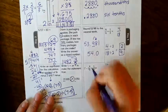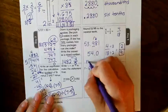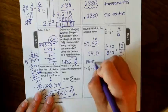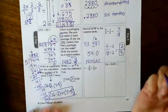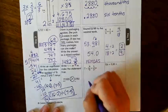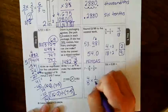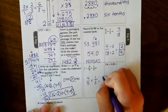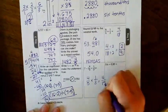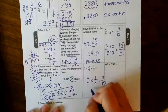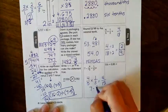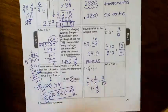Alright, this is please excuse my dear Aunt Sally, PEMDAS. We do what's in parentheses first. So 4 fifths times 1 third. So we get 4 over 15. Now, we do 7 minus 4 fifteenths. How are we going to do that?